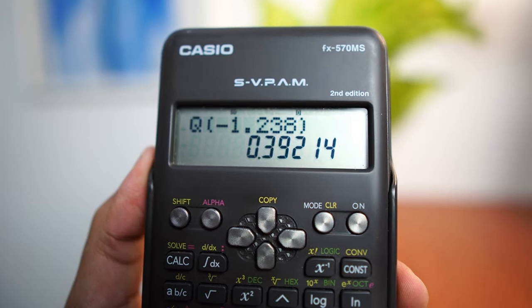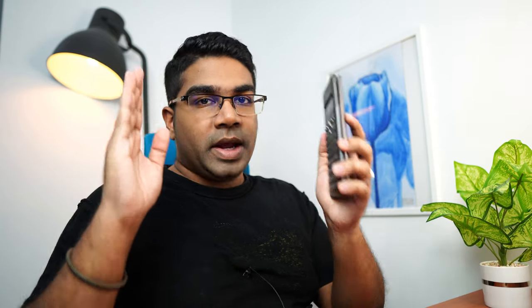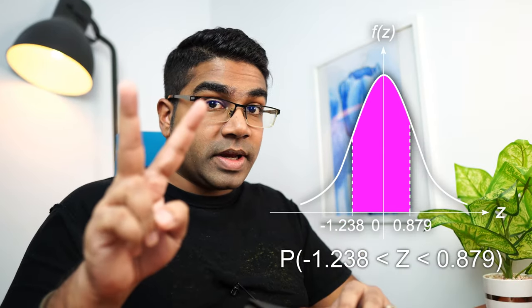What if we wanted to find the probability of Z being in a range but not from 0? There are two ways that we can do this.